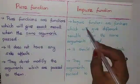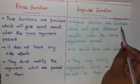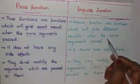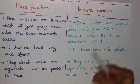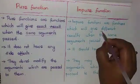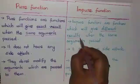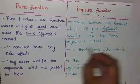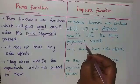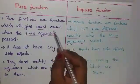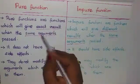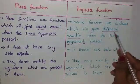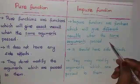Impure functions are functions which will give different results when the same arguments are passed. They give different outputs for the same inputs. To summarize: pure functions give the same result for the same arguments; impure functions give different results for the same arguments.